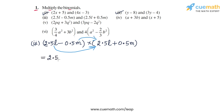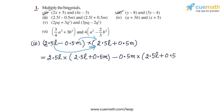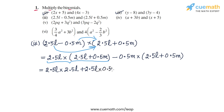This gives us 2.5L times 2.5L plus 0.5M, and then minus 0.5M times 2.5L plus 0.5M. We expand both products using the distributive law: 2.5L into 2.5L, plus 2.5L into 0.5M — that's the first product — and then minus 0.5M into 2.5L, and minus 0.5M into 0.5M.